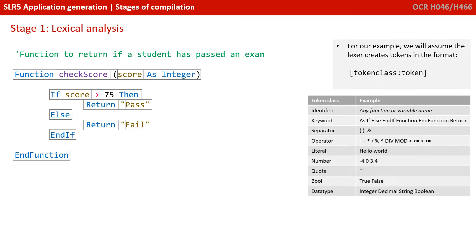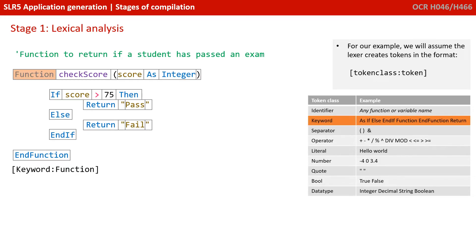For our example, we're going to make some simple assumptions. We're going to assume that the lexer creates tokens in the following format: open square bracket, then a token class — that's from the left-hand column of our table — followed by a colon, and then the contents of the token, followed by a closed square bracket. So we see here the lexer has discovered the first lexeme, looked it up, and knows this is a keyword. So we've created our token pair: square bracket, keyword, colon, function, closed square bracket.